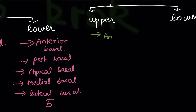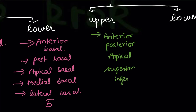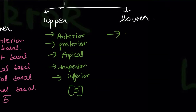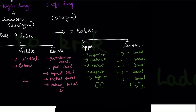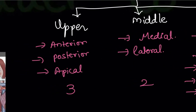For the left lung: the upper lobe consists of anterior, posterior, apical, and basal segments — five total. The lower lobe of the left lung also contains five segments: anterior basal, posterior basal, apical basal, superior basal, and inferior basal.